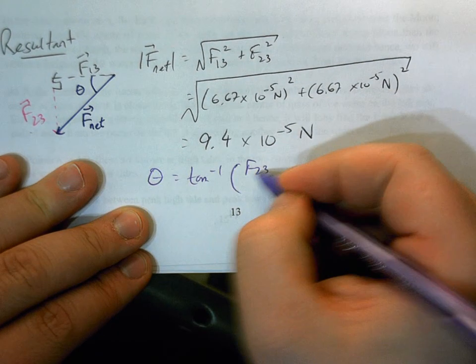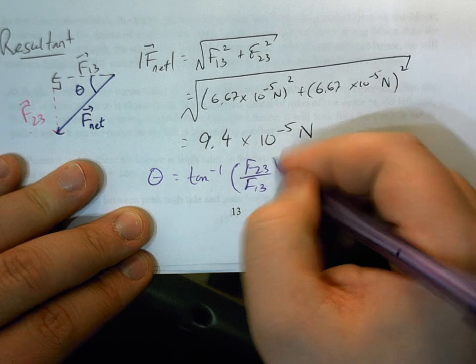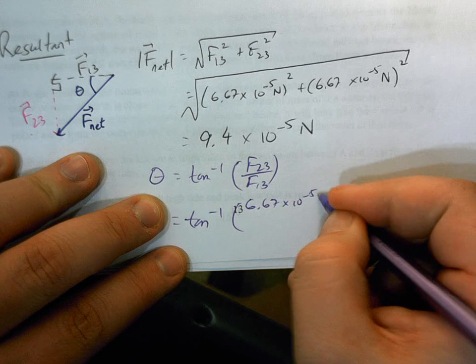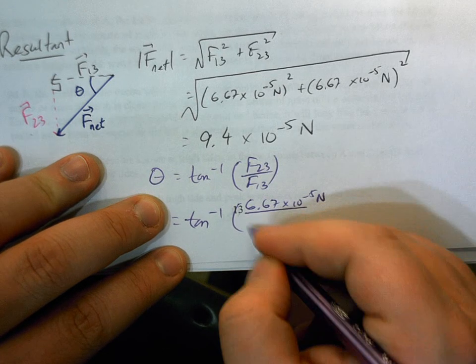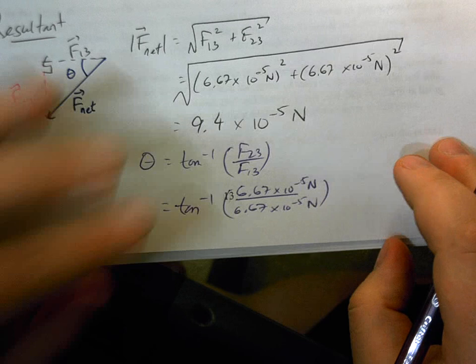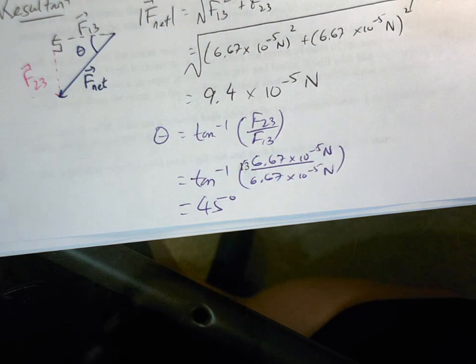F1,3 is going to act as my adjacent. So I'm going to have tangent inverse of 6.67 times 10 to the minus 5 newtons, divided by 6.67 times 10 to the minus 5 newtons, which is going to give me 45 degrees.